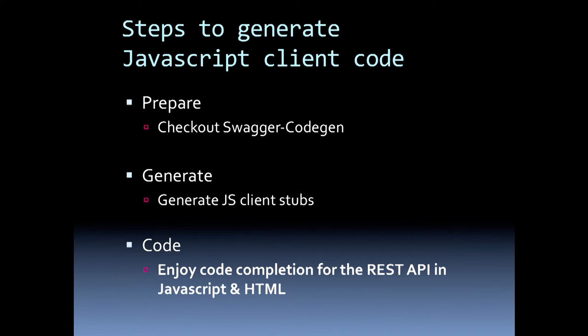So what are the steps? First, check out Swagger CodeGen, generate the client stubs, and you're done. You can enjoy code completion for REST APIs in JavaScript and in HTML.